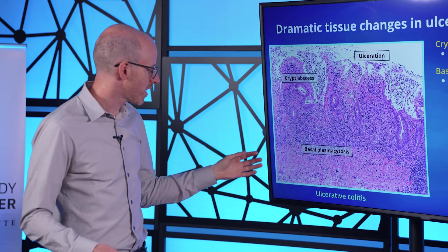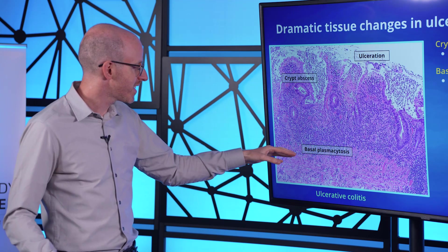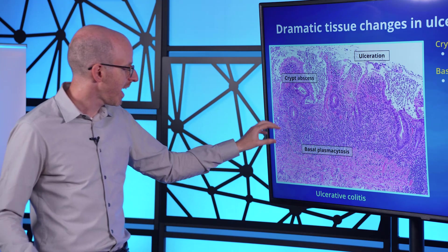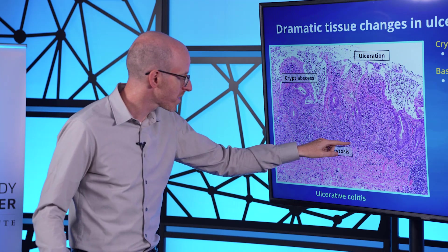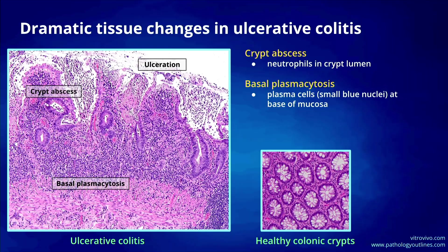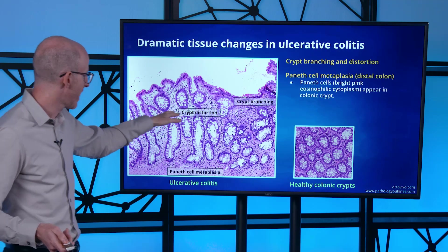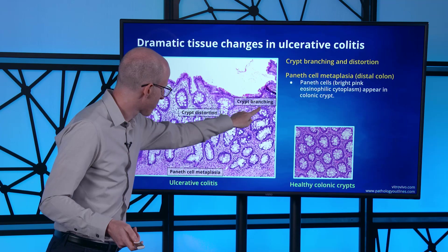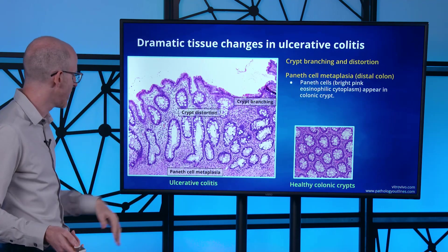A pathologist would also point out basal plasmacytosis — the accumulation of plasma cells, a type of immune cell, at the base of the mucosa. These appear as small blue cells with very prominent blue nuclei stained by the H&E. As another example, crypts can undergo distortion and branching, showing a branching structure that stands in dramatic contrast to the healthy colon.